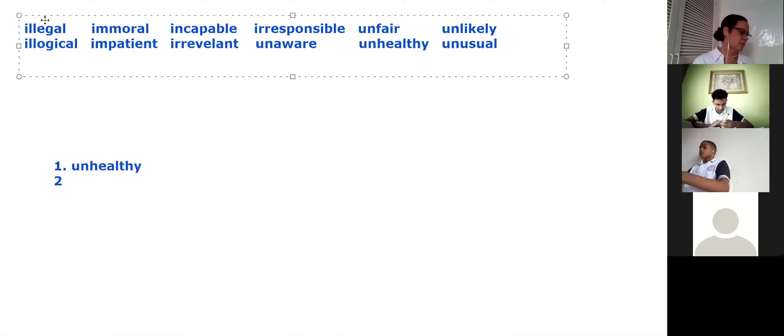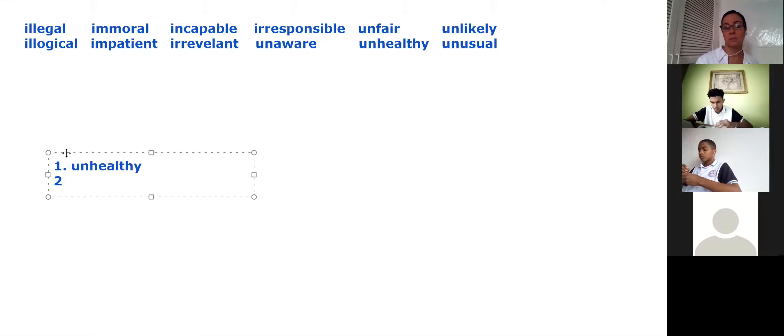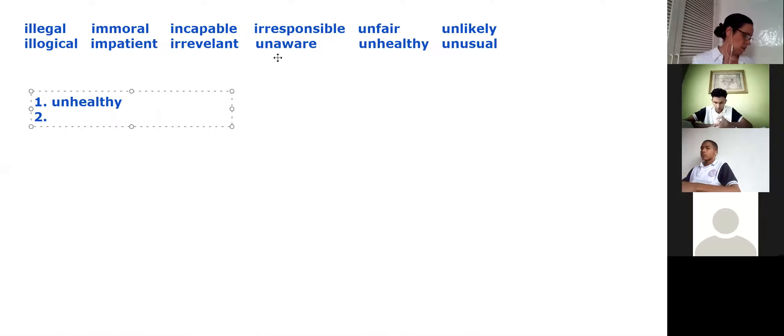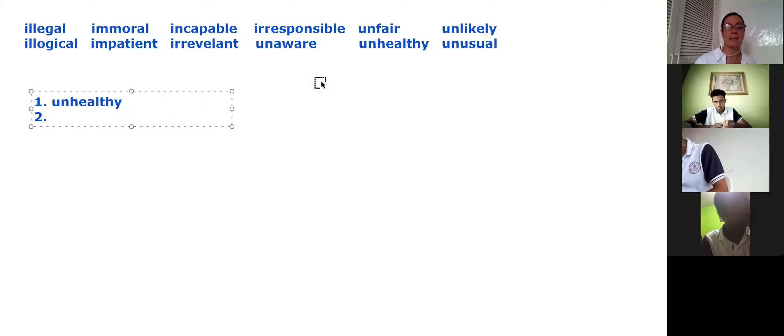The second sentence says: Lucy thinks Matt is blank of being on time. Since it's the negative thing of being on time, he's not on time. Of being on time, he's responsible. We could use irresponsible or it could be incapable, that he's not capable of being on time. I would put incapable for now. Let's see how the others resolve.